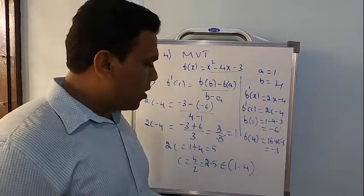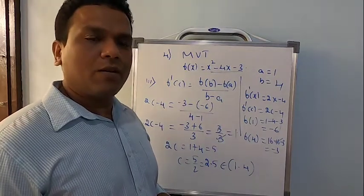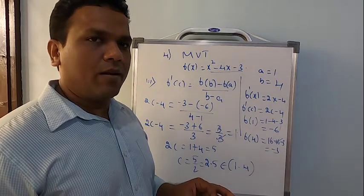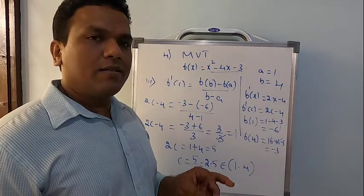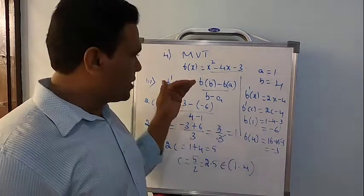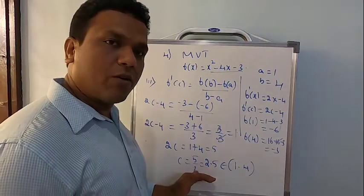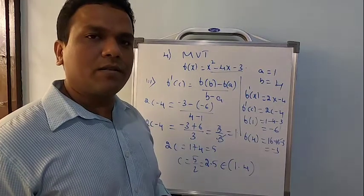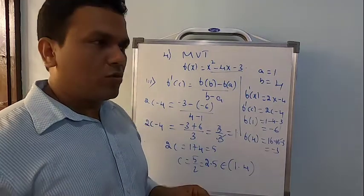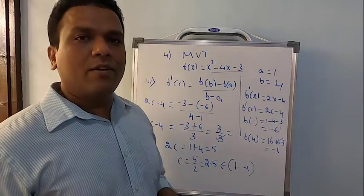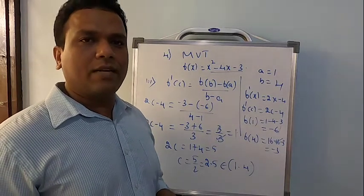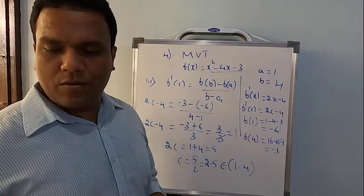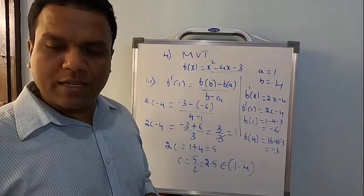So we can conclude that the c value we obtained exists in the open interval (1, 4). Notice that all conditions of the mean value theorem are verified — it is continuous because it is a polynomial, if continuous it is differentiable, and according to the third condition we got the value of c also. Hence all three conditions are verified, and therefore the mean value theorem is satisfied.